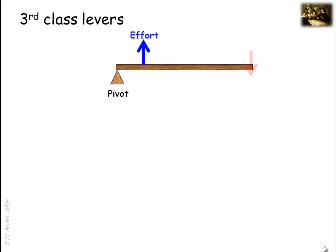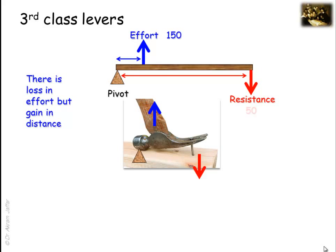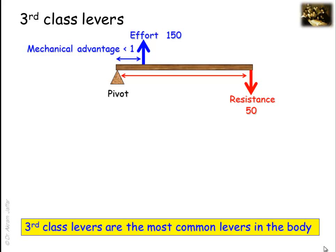In the third class of levers, the effort is located between the fulcrum and the resistance. A common example is a hammer pulling out a nail — exerting a lot of force to pull the handle a little results in a larger movement of the nail. In this situation, the effort arm is always less than the resistance arm. To support resistance, effort must be of greater magnitude than the resistance, but the effort moves less distance than the resistance. Hence, in third-class levers there is loss in effort but gain in distance.